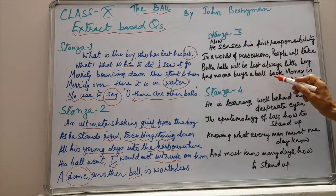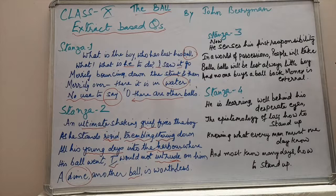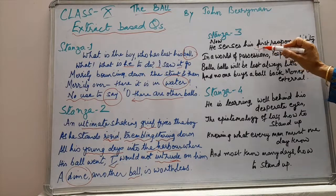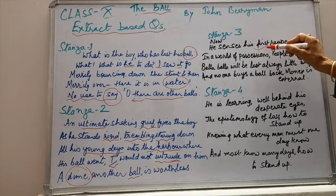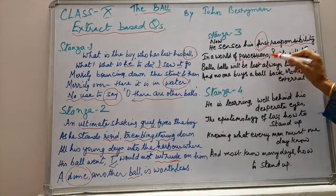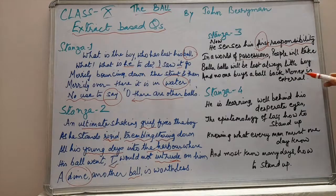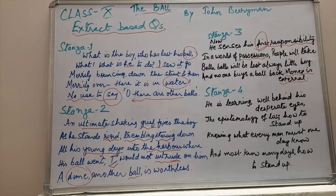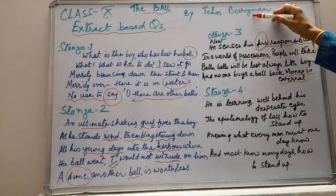What has the loss of ball taught the child? The loss has made him responsible — it has taught him his first responsibility. What does the ball signify? The ball signifies the happy, innocent days of childhood. What does 'possession' mean? Possession means to own things. Why does the poet say money is external? Because money cannot buy the thing which we have lost, though it can buy something identical. The poem is 'The Ball' and the poet is John Berryman.